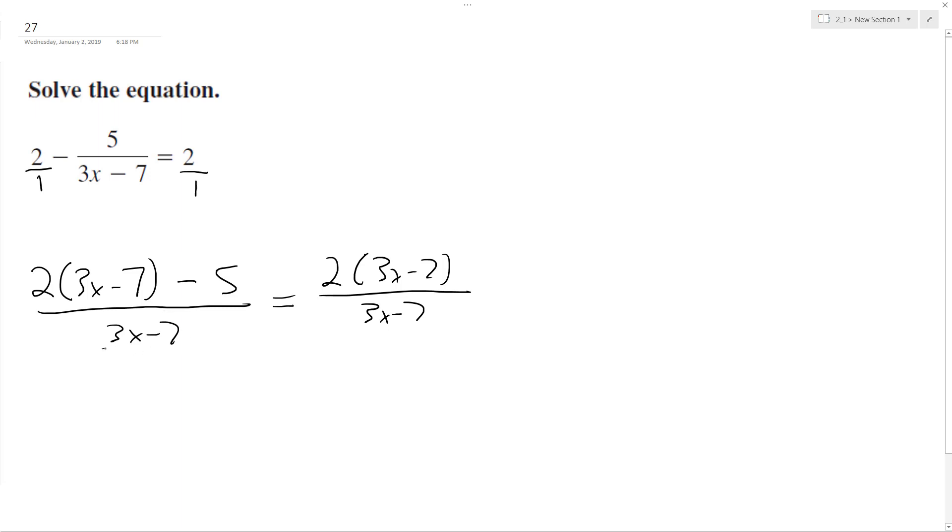Since both sides of the equation have that, I can just get rid of it. Distribute: 6x minus 14 minus 5 is equal to 6x minus 14.